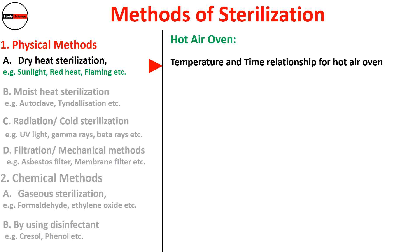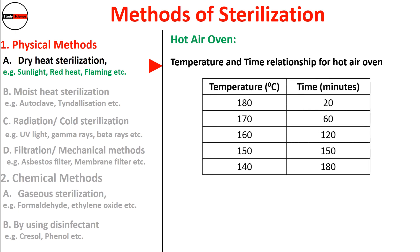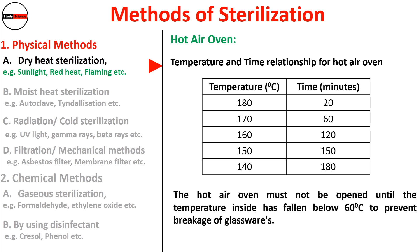The temperature-time relationship for the hot air oven is: 180°C for 20 minutes, 170°C for 60 minutes, 160°C for 120 minutes, 150°C for 150 minutes, and 140°C for 180 minutes. The hot air oven must not be opened until the temperature inside has fallen below 60°C to prevent breakage of glassware — this precaution must be taken when sterilizing glass articles.